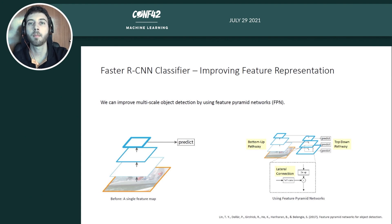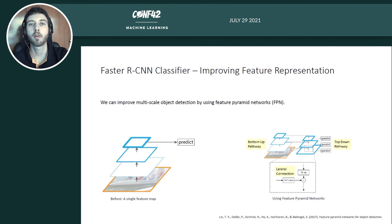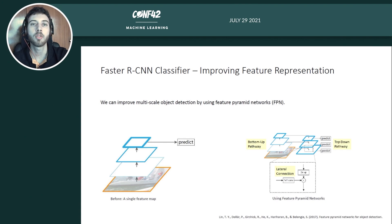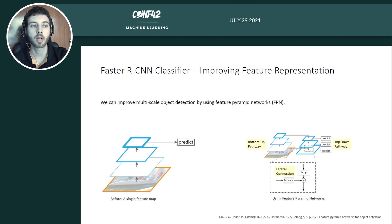By using feature pyramid networks, we can improve multi-scale object detection because the goal of the feature pyramid network is to build high-level semantic feature maps across all pyramid levels from a single image of a single resolution. This is done by merging the bottom-up pathway from the CNN backbone through a top-down pathway with lateral connections.